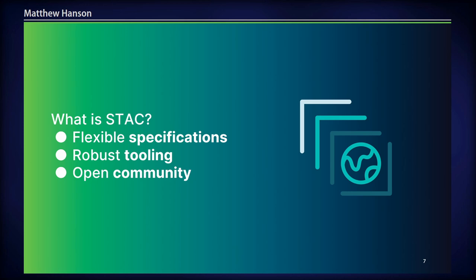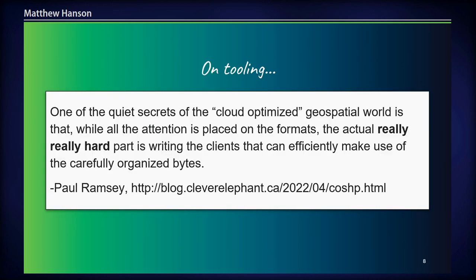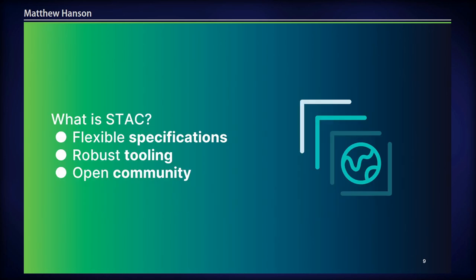So what is STAC? It is specifications — there are four core specifications, three data structure specifications, and one API spec. But STAC is also, in my opinion, more than just the specs. It's about the tooling. I'll put up a quote from Paul Ramsey: 'One of the quiet secrets of the cloud-optimized geospatial world is that while all the attention is placed on the formats, the actual really hard part is writing the clients that can efficiently make use of the carefully organized bytes.' We need to make sure that we make ergonomic, efficient software so that we can really use STAC to its full potential.